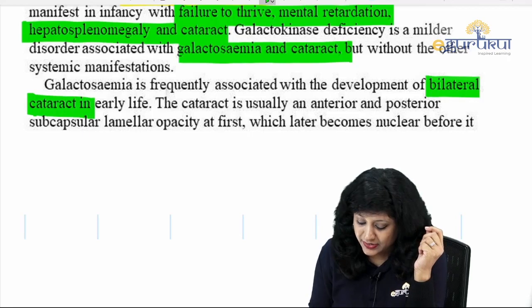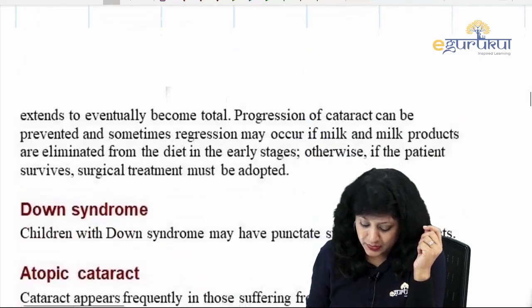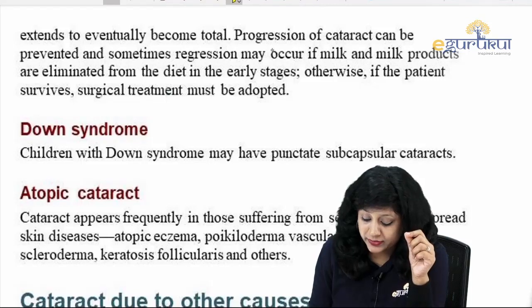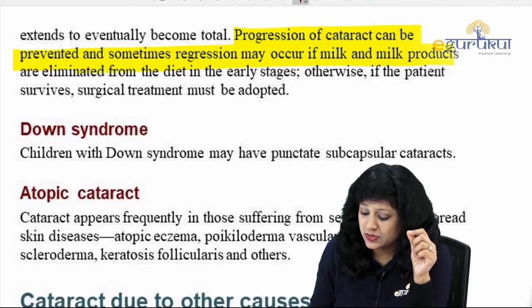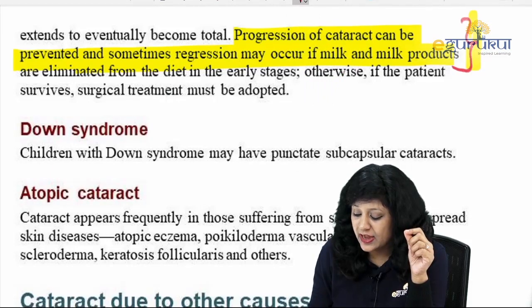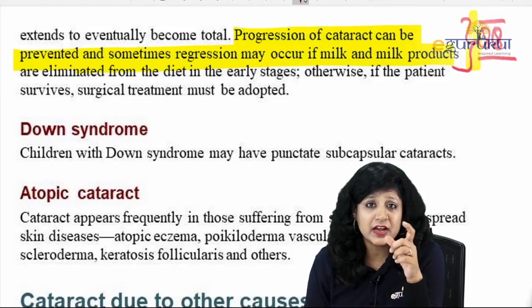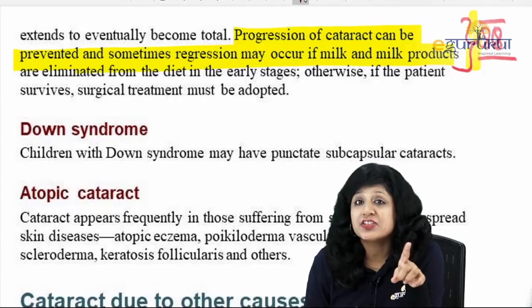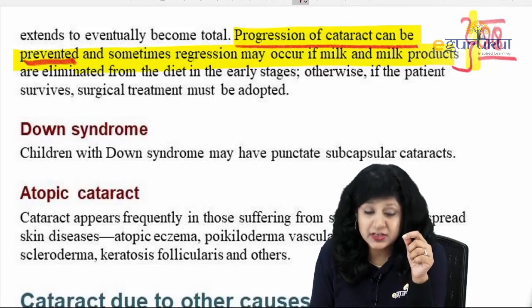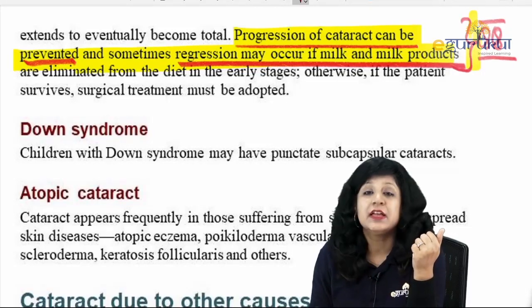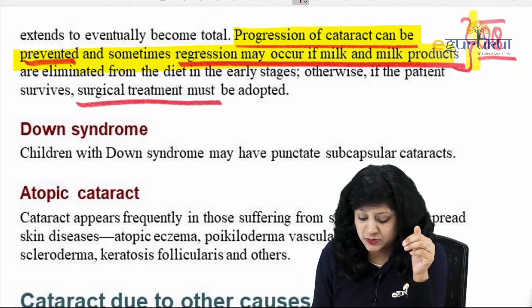The cataract in galactosemia is frequently bilateral. It is usually anterior and posterior subcapsular at first, which later becomes nuclear. Progression of the cataract can be prevented — this is the only type of cataract that is reversible. Restricting dairy products can prevent progression, and complete elimination of milk and milk products from the diet may even lead to regression. Otherwise surgical treatment can also be adopted.